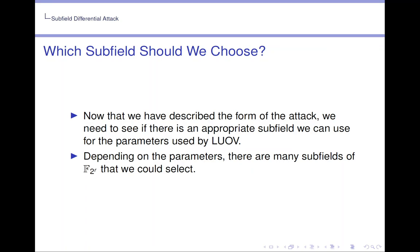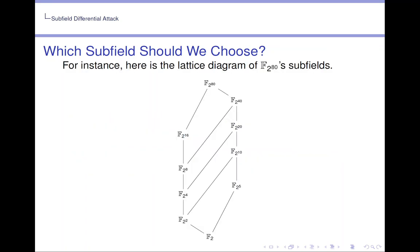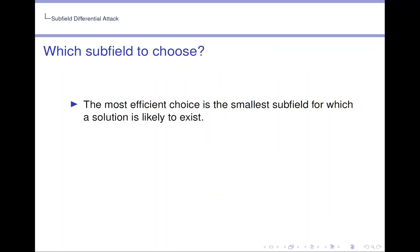Depending on the parameters, there are many subfields of F_{2^r} that we could select. For instance, here is the lattice diagram of F_{2^{80}} subfields. And F_{2^{80}} is one of the finite fields that the LUOV authors used in the original submission. And we see in this case we're spoiled for choice which subfield we could pick.